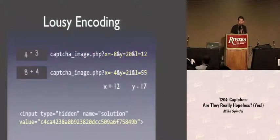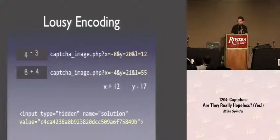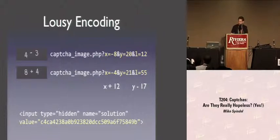It gets a little better — the people who wrote this CAPTCHA were feeling a little lazy and didn't want to do the computation server-side, so they encoded the solution itself in the form. Of course, the solution was just the MD5 of the answer. And when the solution only varies from integers 0 to 20, that's not a very large search space.